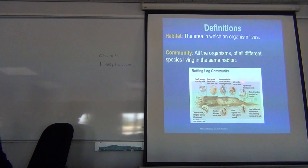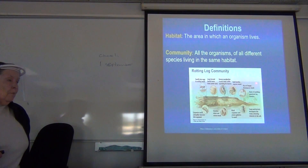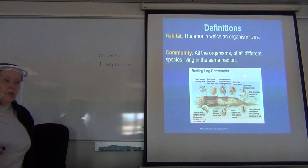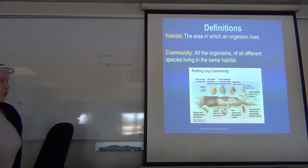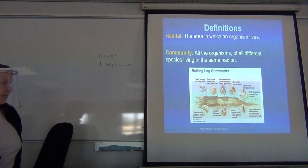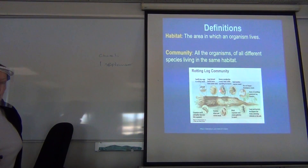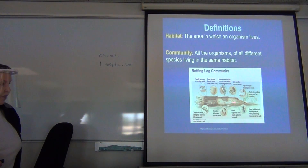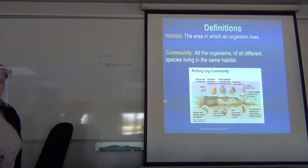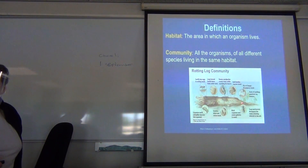This gives you an example of a community — a rotting log community. It is all the living organisms: the plants, animals, fungi, termites, and bacteria — every single thing living there belongs to that community.